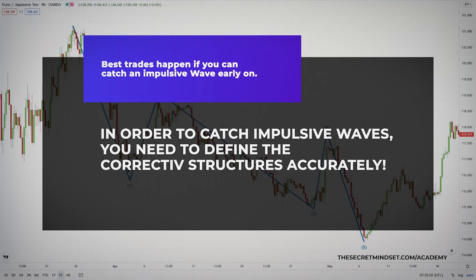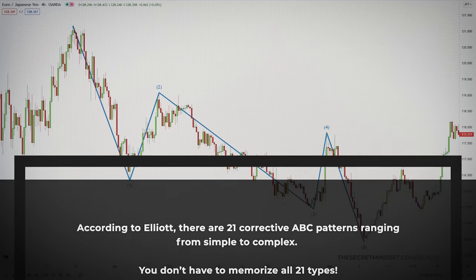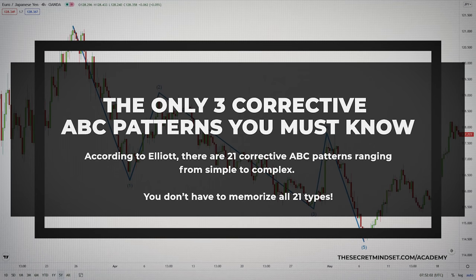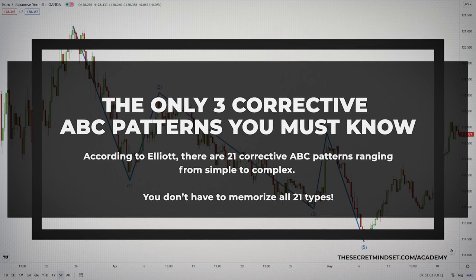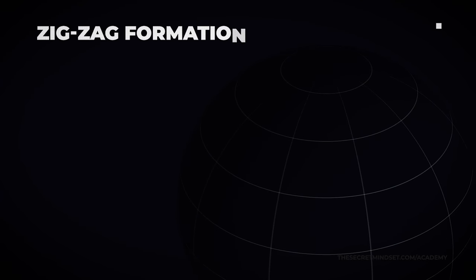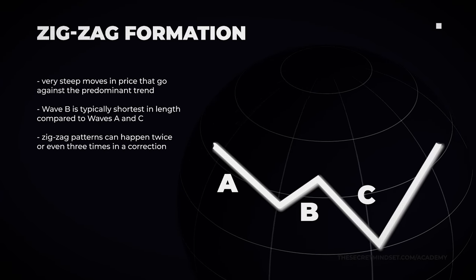The best trades happen if you catch an impulsive wave early on. But in order to catch those waves, you need to define the corrective structures accurately. According to Elliott, there are 21 corrective ABC patterns ranging from simple to complex. You don't have to memorize all 21 types because they are just made up of 3 very simple, easy-to-understand formations. The first one is the zigzag formation. Zigzag formations are very steep moves in price that go against the predominant trend. Wave B is typically shortest in length compared to waves A and C. These zigzag patterns can happen twice or even three times in a correction.